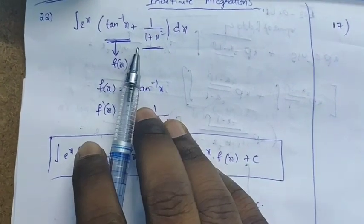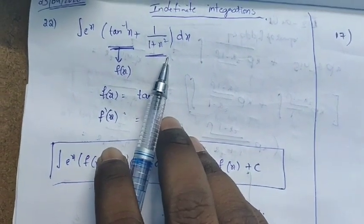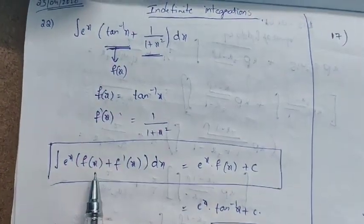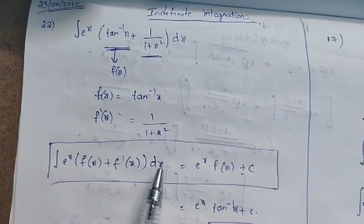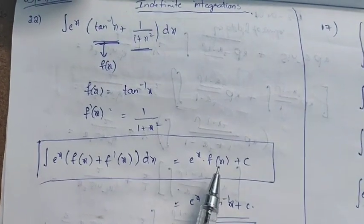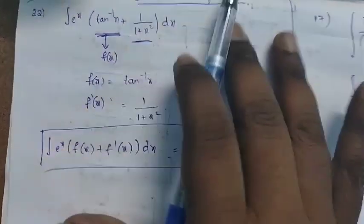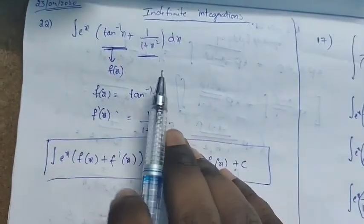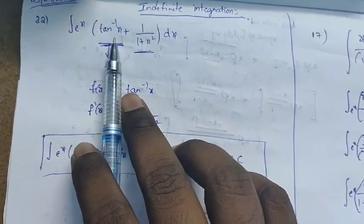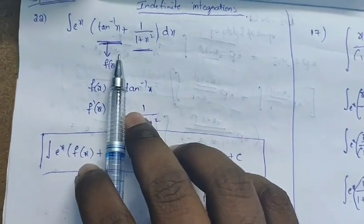Integration of e^x · [tan⁻¹(x) + 1/(1 + x²)]. What is the formula? The integral of e^x · [f(x) + f'(x)] dx = e^x · f(x) + constant. Now, you have to choose which is f(x). Suppose tan⁻¹(x) is f(x).